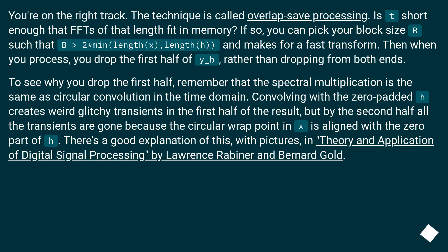You're on the right track. The technique is called overlap-save processing. Is T short enough that FFTs of that length fit in memory? If so, you can pick your block size B such that B equals length x minus length h, and makes for a fast transform.